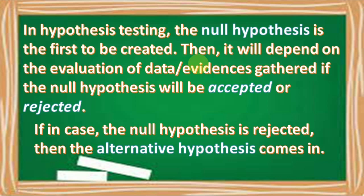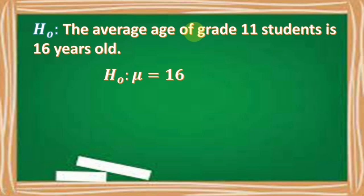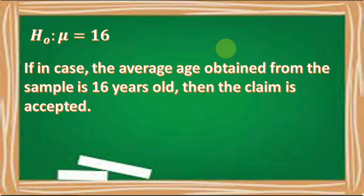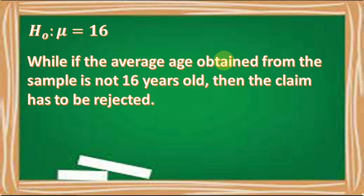If the null hypothesis is rejected, then the alternative hypothesis comes in. Let's have this given statement as a null hypothesis: the average age of grade 11 students is 16 years old — in symbol, μ = 16. To test the claim, you may survey a sample of 50 students and get their average age. If the average age from the sample is 16 years old, the claim is accepted. If not, the claim is rejected and the alternative hypothesis comes in, using the symbol μ ≠ 16.